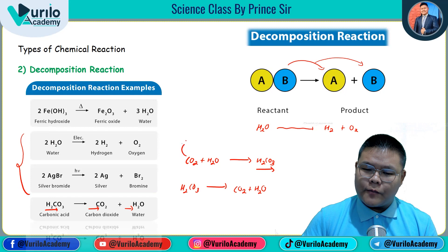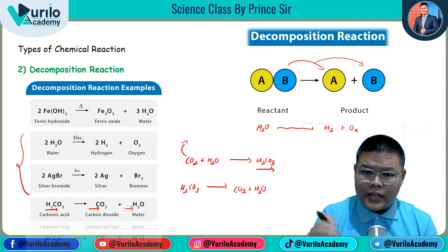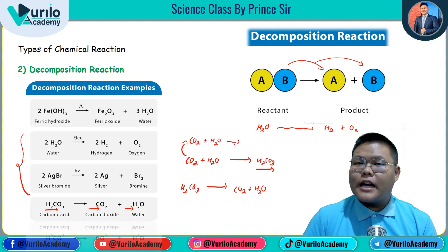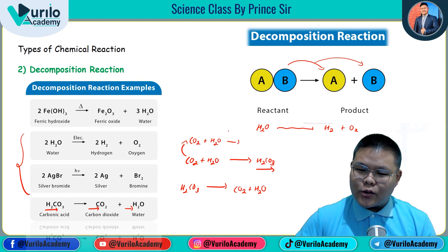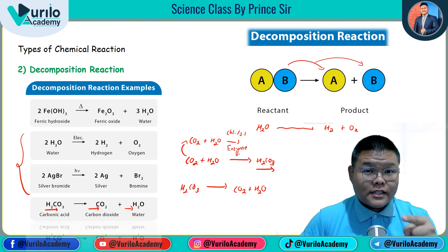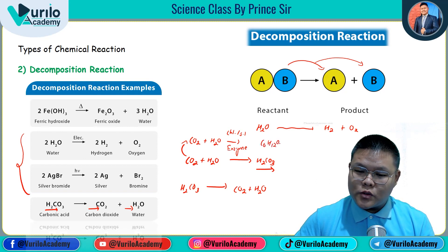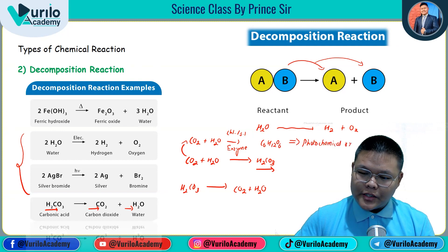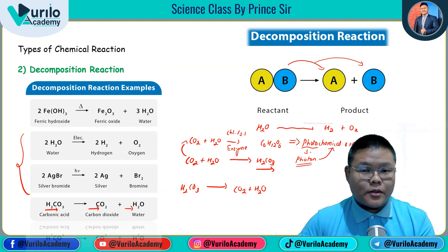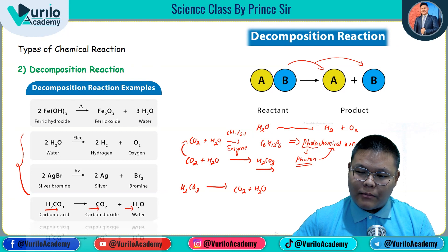This is an interesting fact. We have CO2 and H2O mixed, giving carbonic acid. We have chlorophyll, sunlight, and enzymes present. We use the formula C6H12O6 — we have glucose. This is an example of a photochemical reaction, where light drives the reaction. It is photochemical.